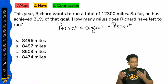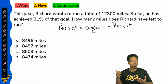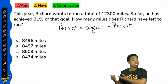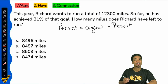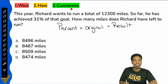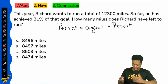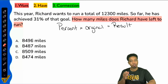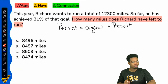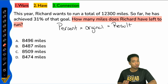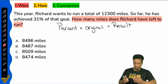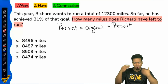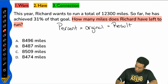With that said, let's go ahead and solve this question using that formula. Step one: what do we want, what do we have, what's the connection? What we want is found in the question sentence: how many miles does Richard have left to run? So we're going to write down somewhere, or just keep in our heads: we want blank miles left.